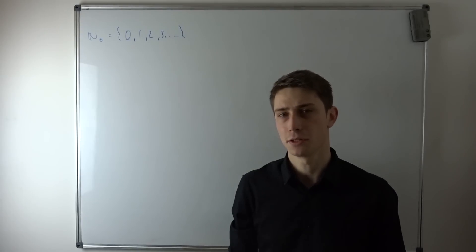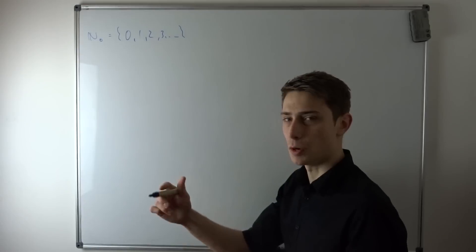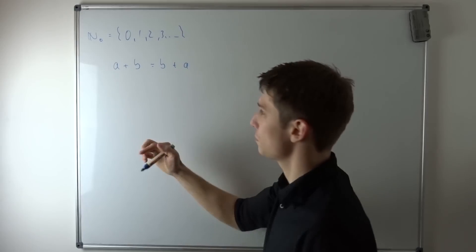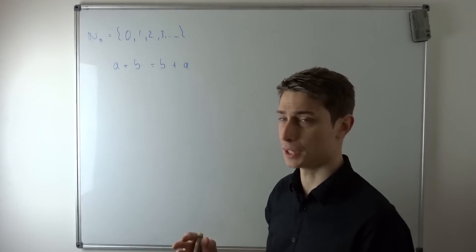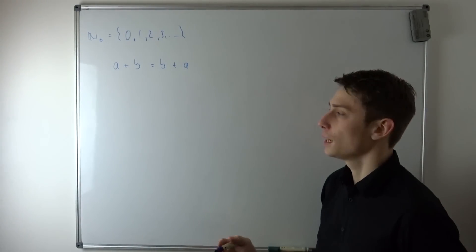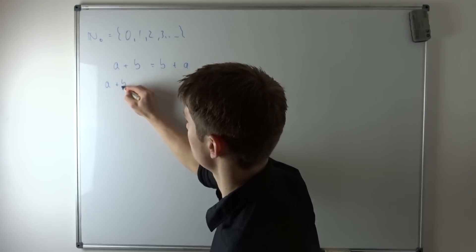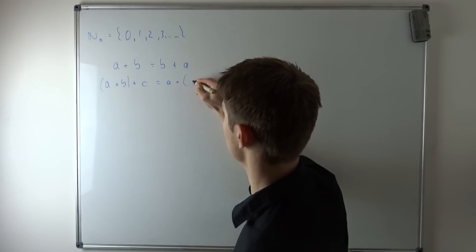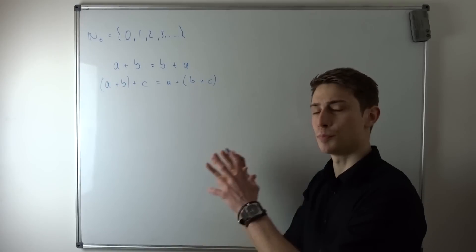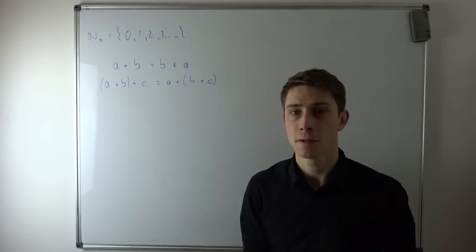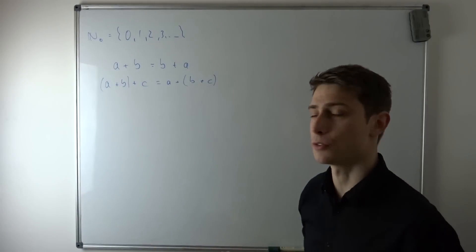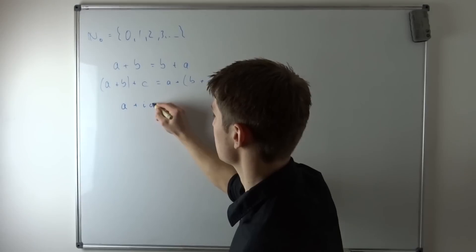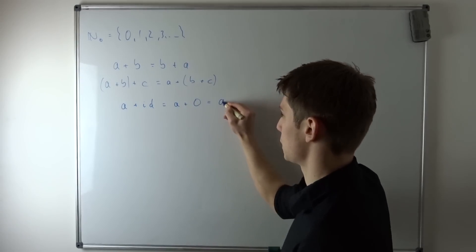Certain rules apply to natural numbers. For example, for two elements a and b, we can say a plus b equals b plus a — so they commute, they are abelian. Also, we can say that (a plus b) plus c equals a plus (b plus c), so we can place parentheses wherever we want and it won't change anything. And since we are including zero into the natural numbers, that's the additive identity: a plus zero equals a.